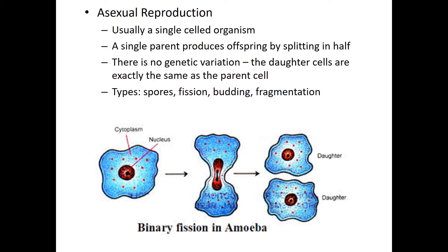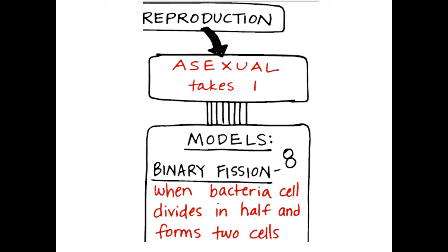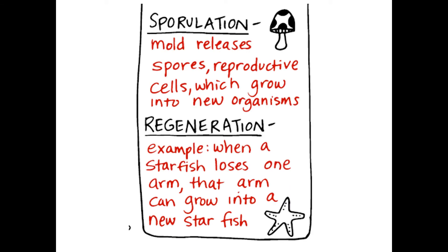Here's an example of binary fission in an amoeba. This is asexual reproduction that usually occurs in single-celled organisms, though it also happens in some multicellular organisms. The organism doubles itself and splits. The important thing to remember is that there is no genetic variation — all of the daughter cells look exactly like the parent cell because there was only one parent providing the DNA. Binary fission is when a bacteria cell divides in half to form two cells.